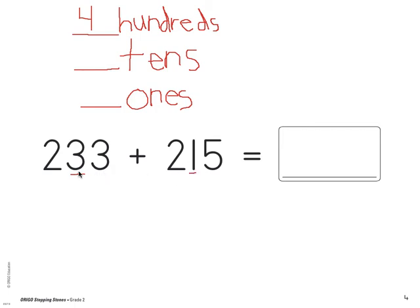Now we move on to our 10s. We have three 10s over here, one 10s over here. What's three plus one? Four. Now our ones. Three ones over here, five ones over here. Three and five is eight. Now we're going to write our answer. So four 100s is actually the number 400, right? So we have 400 plus four 10s. Four 10s remember is 40. And eight ones is just an eight. So 233 plus 215 is 448.